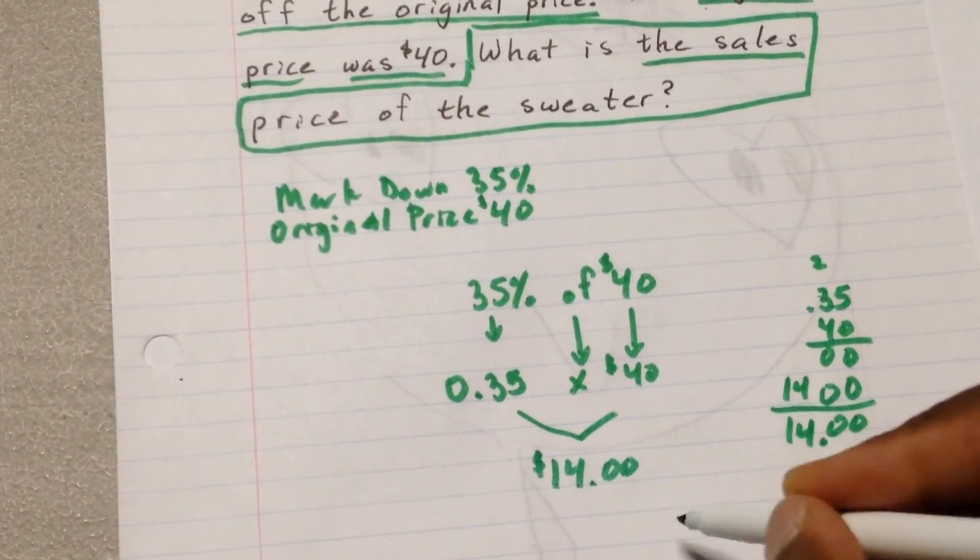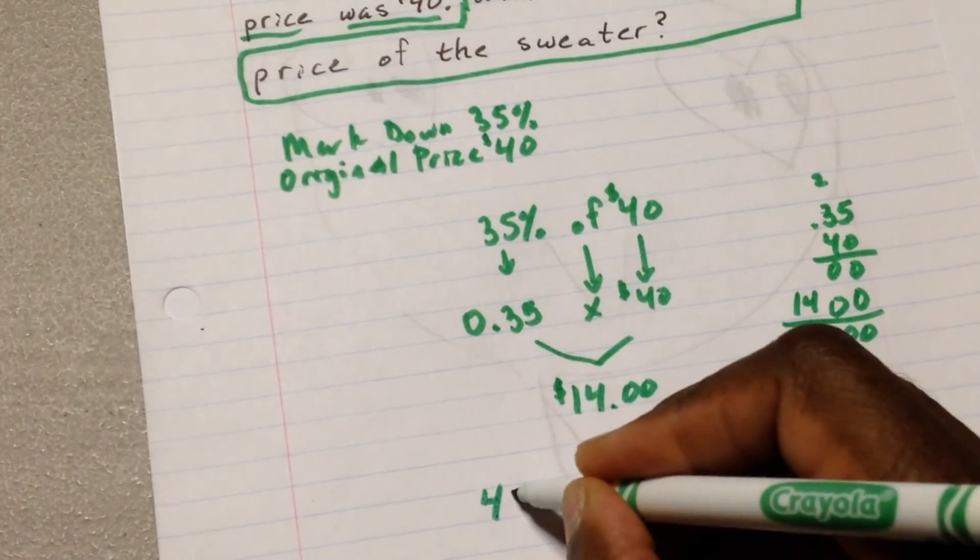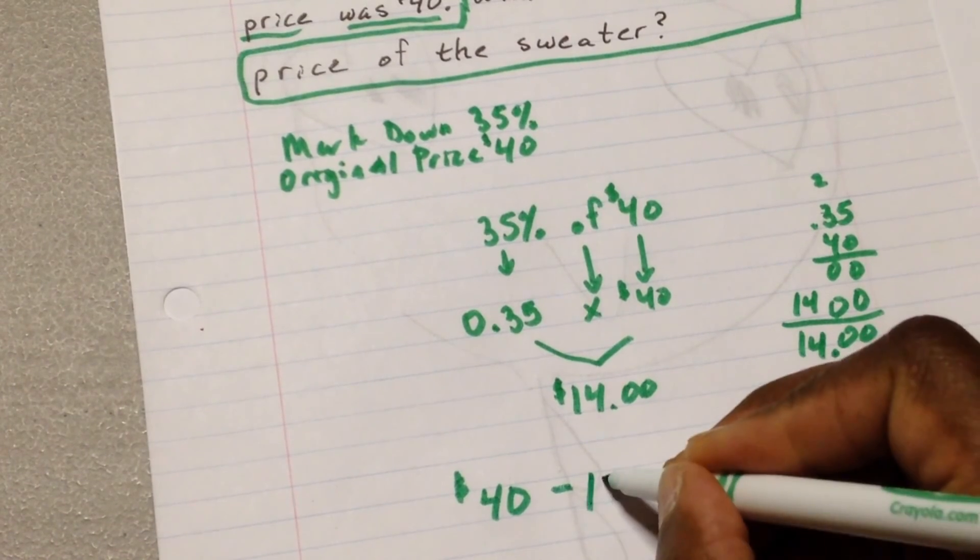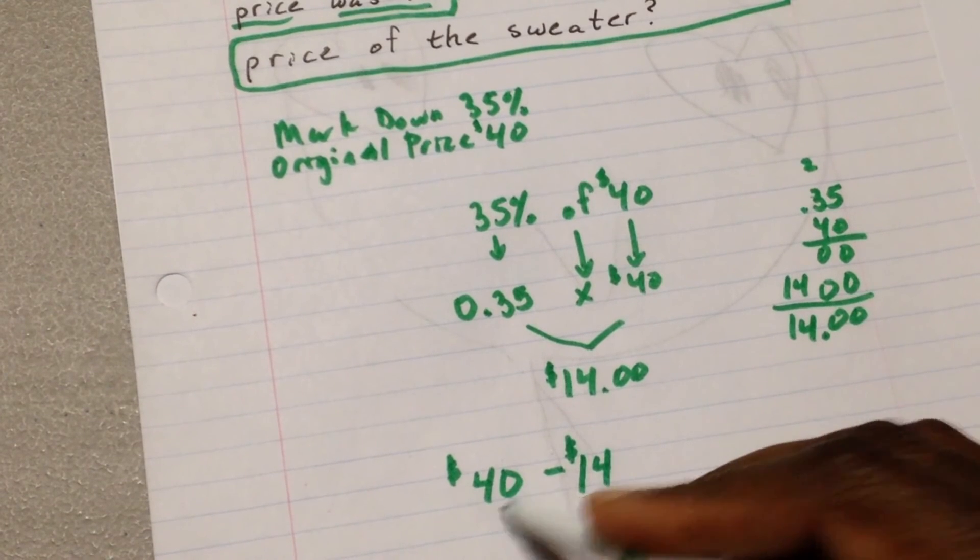That is the markdown, how much we're taking off. So once again, we have $40. We take it away. All right. We take away $14 from the $40.